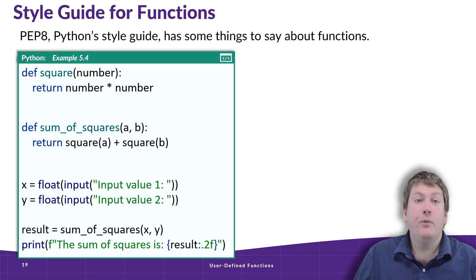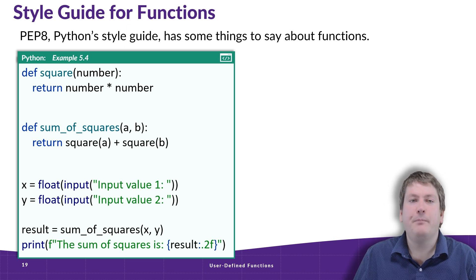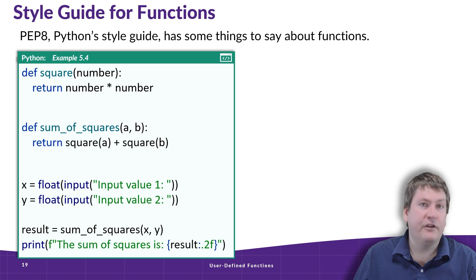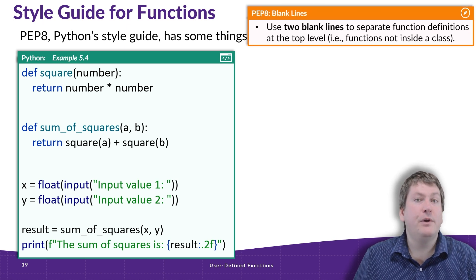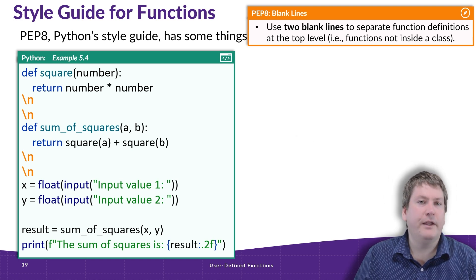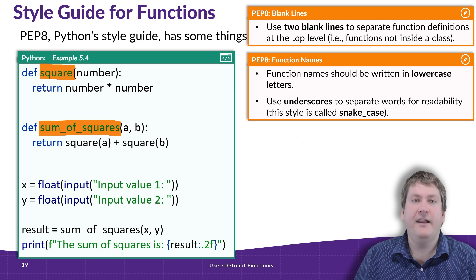Now, Python does have a style guide called PEP8 that tells us best practices for formatting and styling our code. These aren't things that would cause errors — they're just best practices for writing code to make it the most readable and standardized as possible. PEP8 does have some things to say about functions. One is that we should use two blank lines to separate function definitions — whenever we have a function definition, there should be two blank lines separating it from other lines of code and other function definitions. The other thing PEP8 says about functions is that their names should be written in lowercase letters, using underscore characters to separate words — this is called snake case, just like variable names.